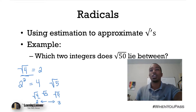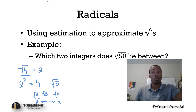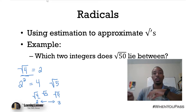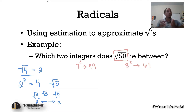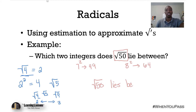Applying that to our problem: which two integers does the square root of 50 lie between? Knowing our perfect squares — 7 squared is 49 and 8 squared is 64 — 50 is between 49 and 64, closer to 49. So the square root of 50 lies between the square root of 49 and the square root of 64, which means it lies between 7 and 8.